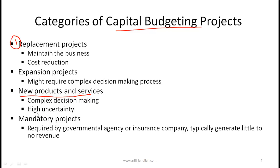There is going to be significant uncertainty about cash flows for new products relative to some of the other categories. The fourth category is mandatory projects — these are required by government agencies or insurance companies and they typically generate little to no revenue.